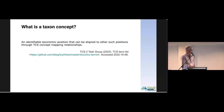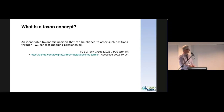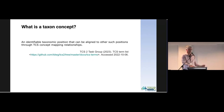I didn't want the name in the definition because I don't think it's a good idea to define a concept by its label. So this is what Nico came up with: an identifiable taxonomic position — Nico doesn't like to use the word 'taxon' — that can be aligned to other such positions via TCS taxon concept mapping relationships. The two important words here are 'identifiable' — it must be identifiable, because a name alone isn't, as a name can apply to multiple taxon concepts — and 'alignable,' meaning it needs enough context to be aligned with other taxon concepts.